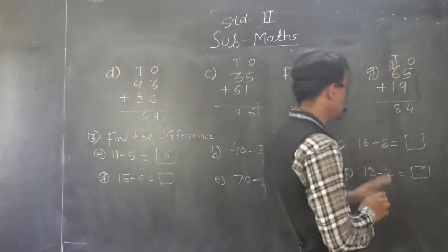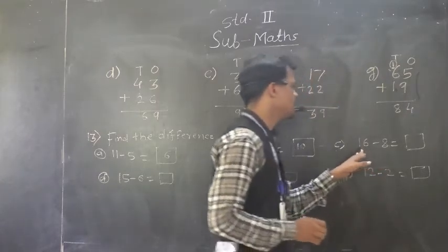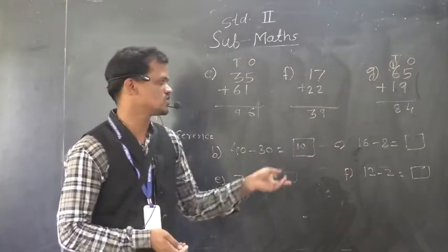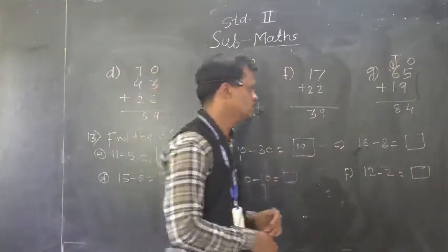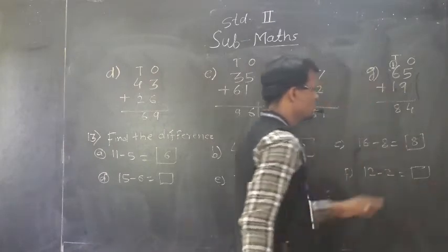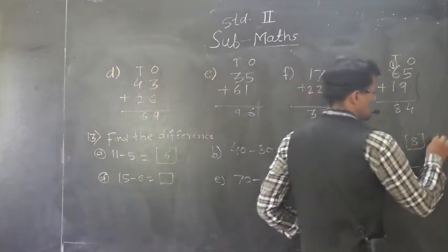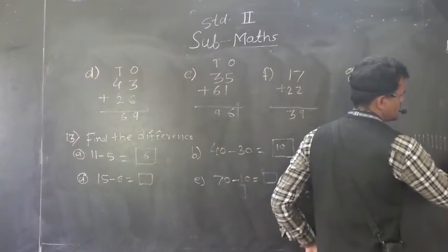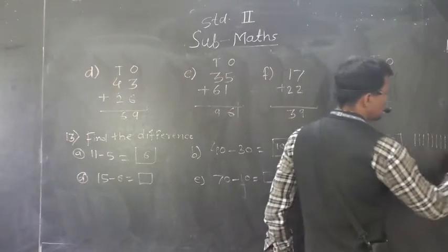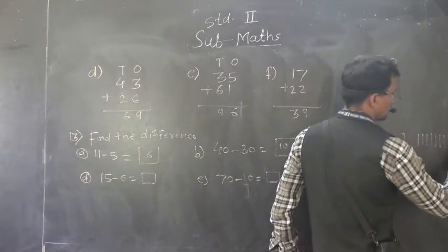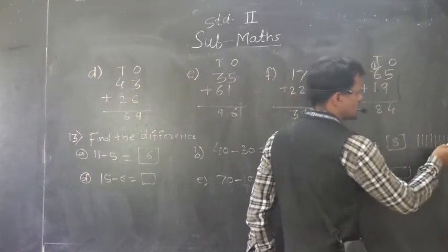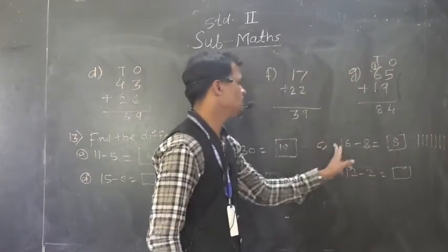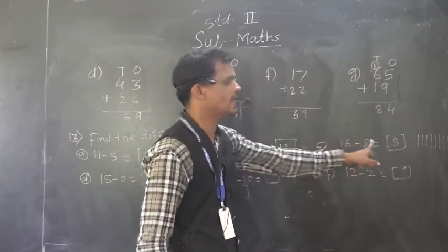Then, 16 minus 8. So, you know that 8 to the 16 means 10 plus 8, 16. So, 16 minus 8, 8. Otherwise, you can draw lines. 1, 2, 3, 4, 5, 6, 7, 8, 9, 10, 11, 12, 13, 14, 15, 16. And cut 8 times: 1, 2, 3, 4, 5, 6, 7, 8. How many lines left here? 1, 2, 3, 4, 5, 6, 7, 8. So, it is the difference of 16 and 8.